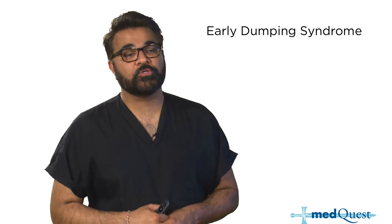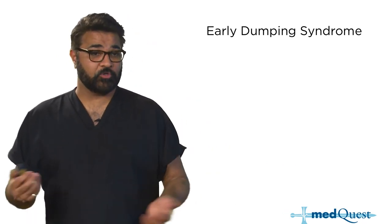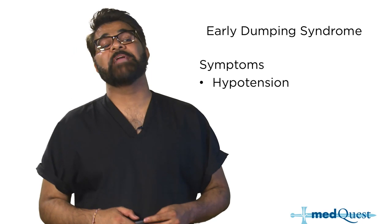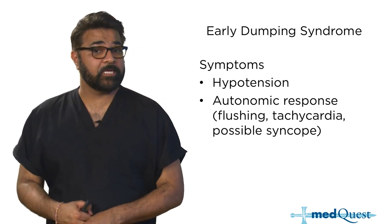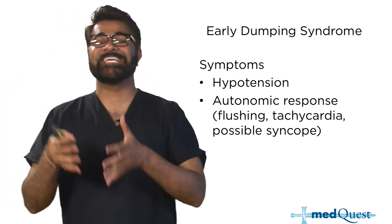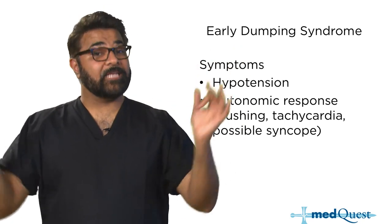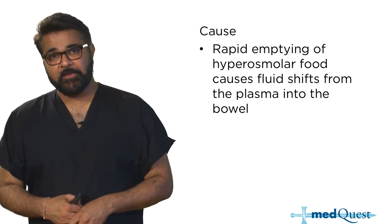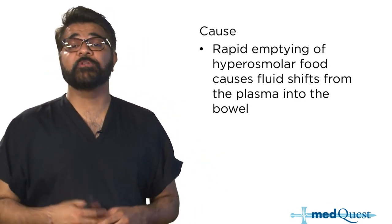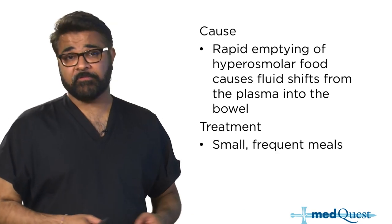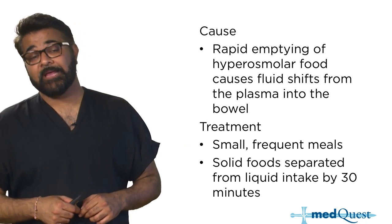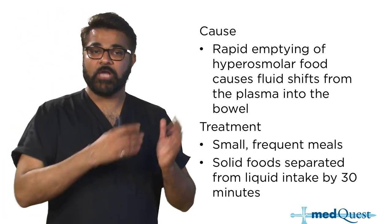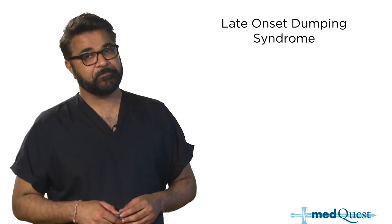Some patients who have had abdominal or bariatric surgeries can develop dumping syndrome — there are two types, early and late. Early dumping presents with postprandial hypotension, flushing, tachycardia, and possible syncope. The high-tonic food load hits the intestines too quickly, pulling water from the vascular space, causing fluid shifts from the plasma into the bowel. Treatment is small frequent meals with solids first and liquids 30 minutes later.